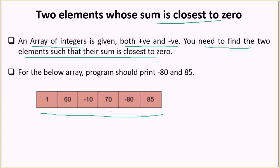So for the given example with elements 160, minus 10, 70, minus 80 and 85, we find that the elements minus 80 and 85 have a sum closest to zero, that is 5. For all other combinations of two elements in this array, the absolute value of their sum will be greater than 5. We are checking that the absolute value of the sum should be closest to zero, so even if the sum is minus 2, that would be a better answer.